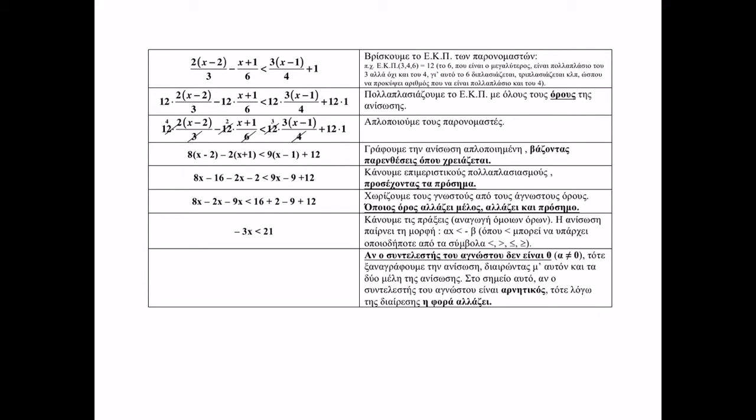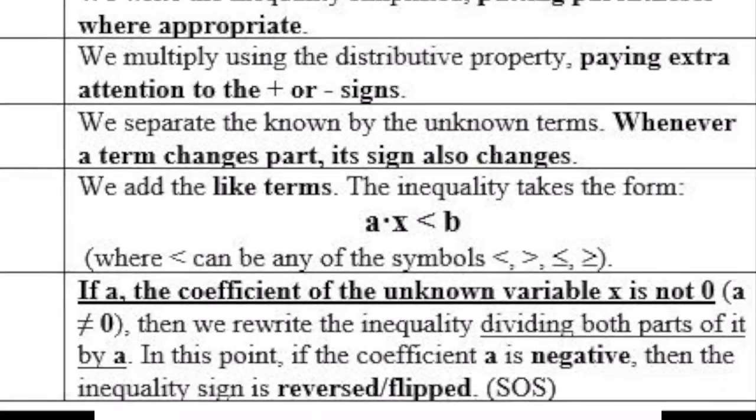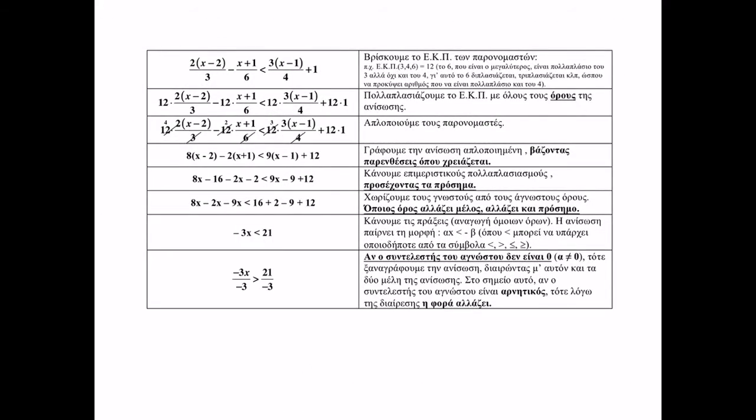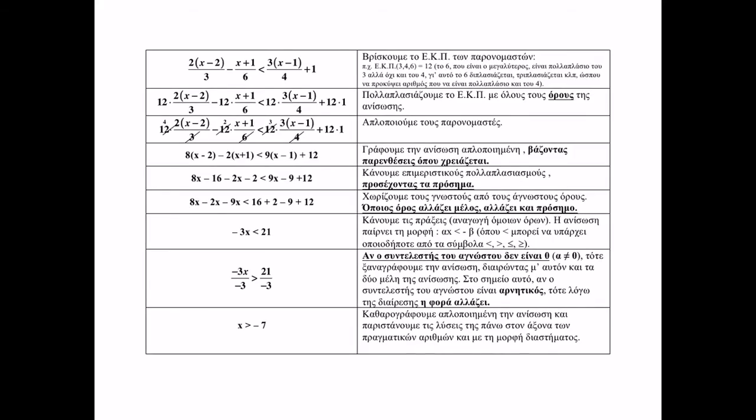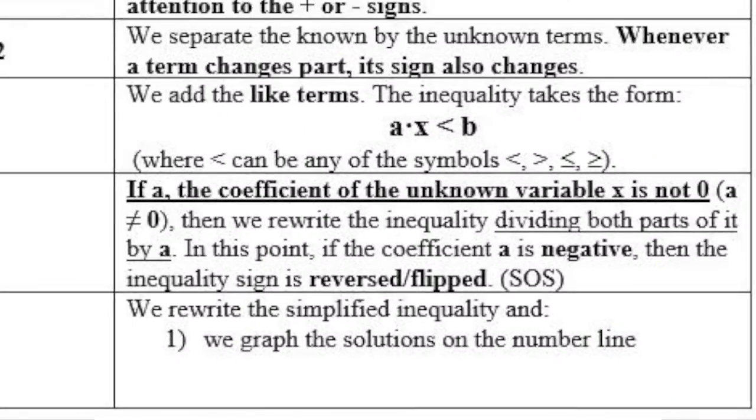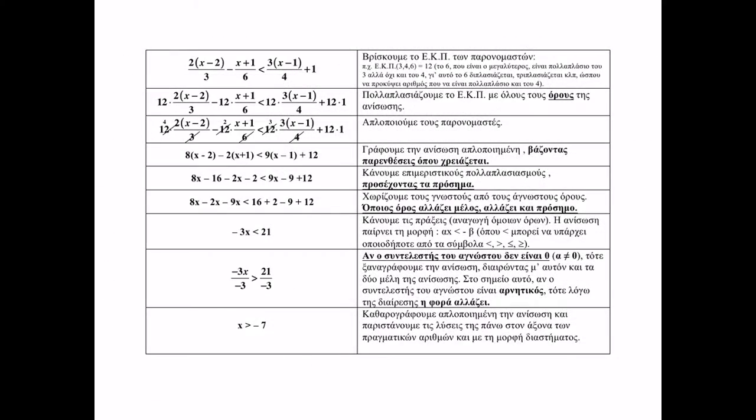The inequality has taken the form ax less than b. Now it is time to divide both parts of the inequality by the coefficient of x as long as it is not zero. We rewrite its two parts below without the symbol of the inequality between them. We divide them by the coefficient, that is, we denote the coefficient as denominator for both parts. And if the coefficient is negative, we change the direction of the inequality sign, otherwise we leave it as it is. This can be either written or done in our minds. We rewrite the inequality simplified. Minus 3 is simplified and x remains in the first part, while 21 divided by minus 3 equals minus 7 in the second part.